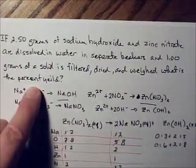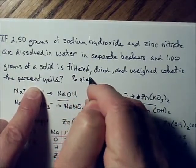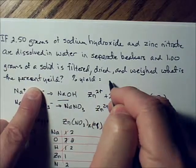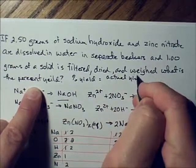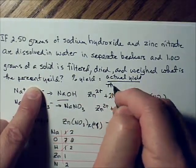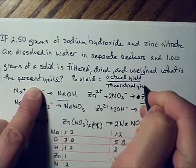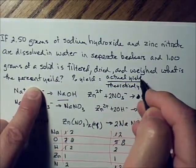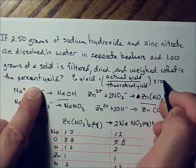Percent yield, by definition, is actual yield divided by theoretical yield. Actual yield divided by theoretical yield, and then that number gets multiplied by 100.